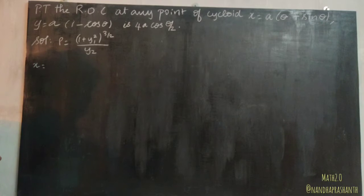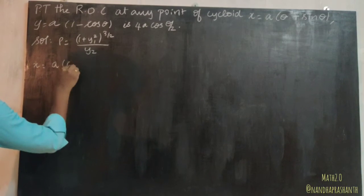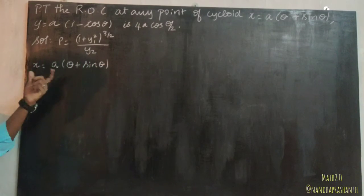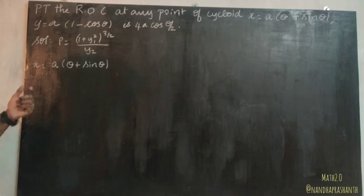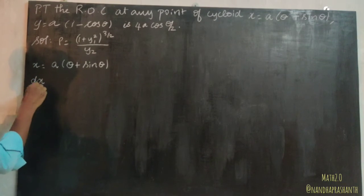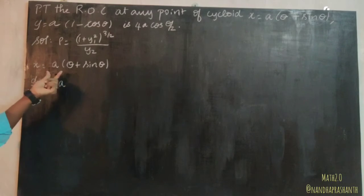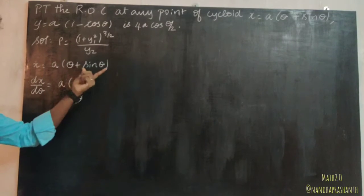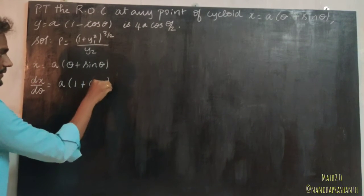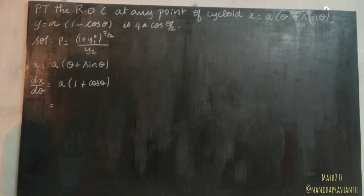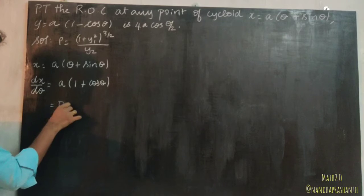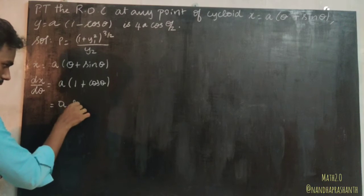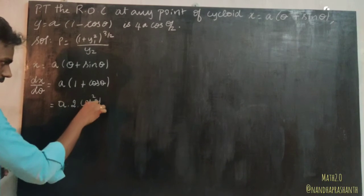x = a(θ + sinθ). Differentiating with respect to θ: dx/dθ = a(1 + cosθ). Now, 1 + cosθ = 2cos²(θ/2), so dx/dθ = 2a·cos²(θ/2).